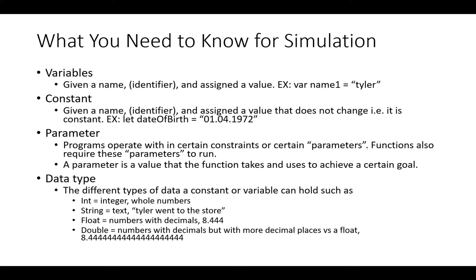The last thing to quickly go over is data types. Variables and constants can hold values for us, and depending on what kind of value we want to hold, that will determine the data type. For the example we used earlier — var name1 = "Tyler" — that is a string data type. "Tyler" within quotes is a string.